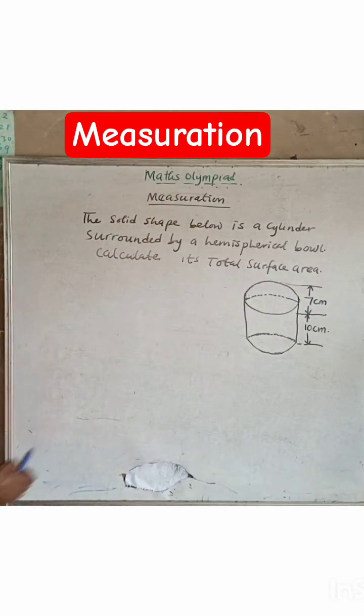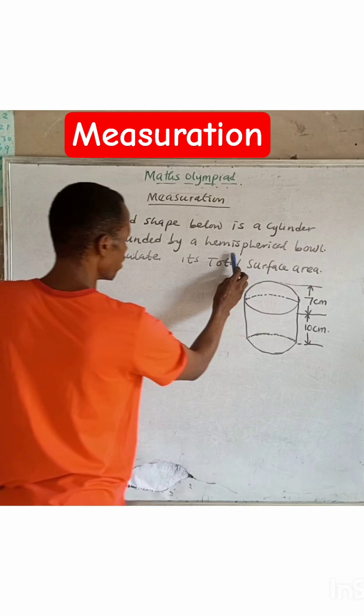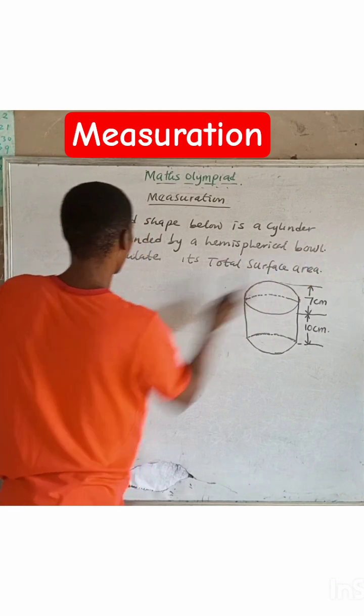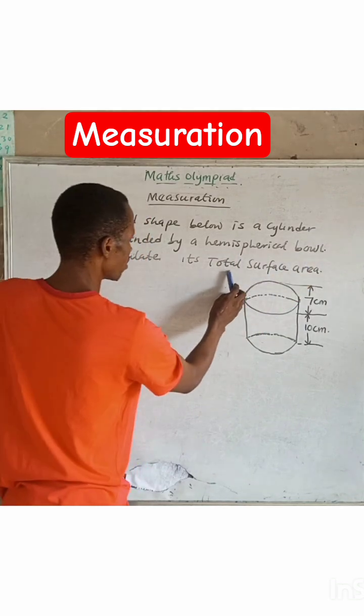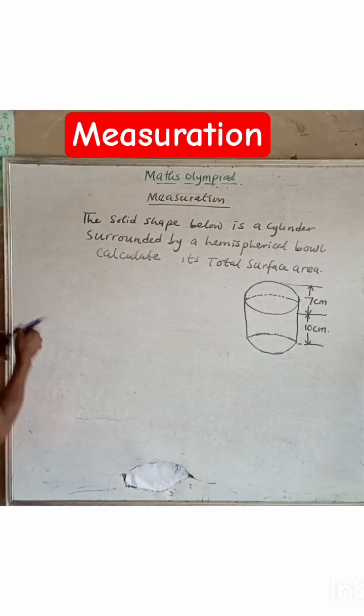Now this is mensuration as a topic. The solid shape below is a cylinder surrounded by a hemispherical bowl. Calculate its total surface area. This is hemispherical.